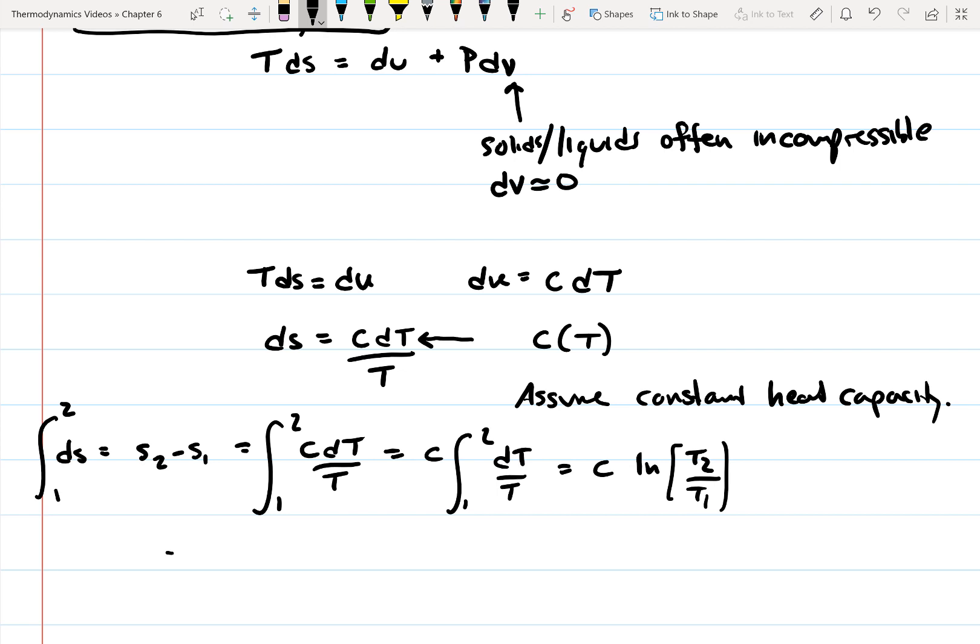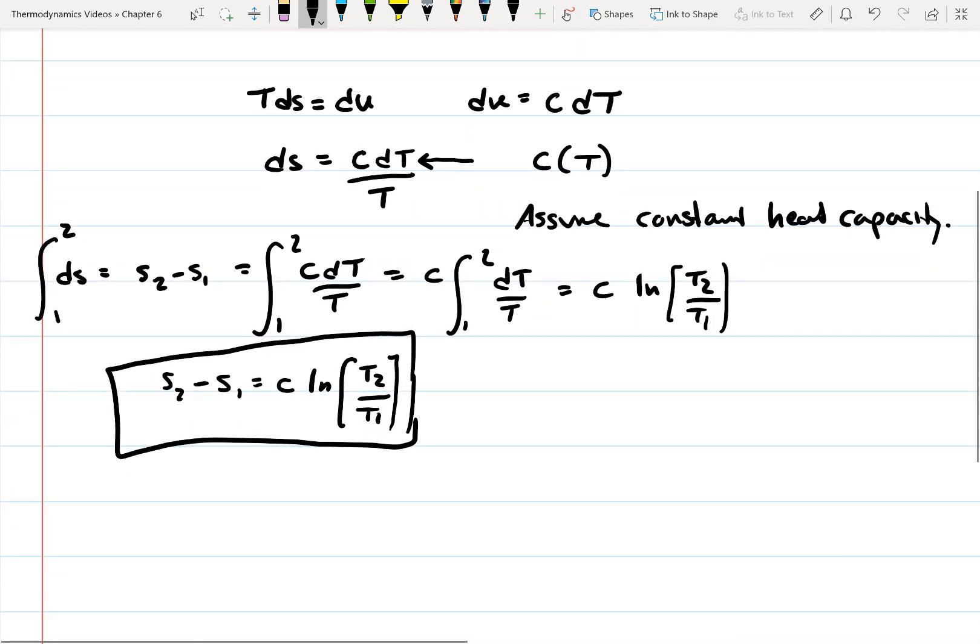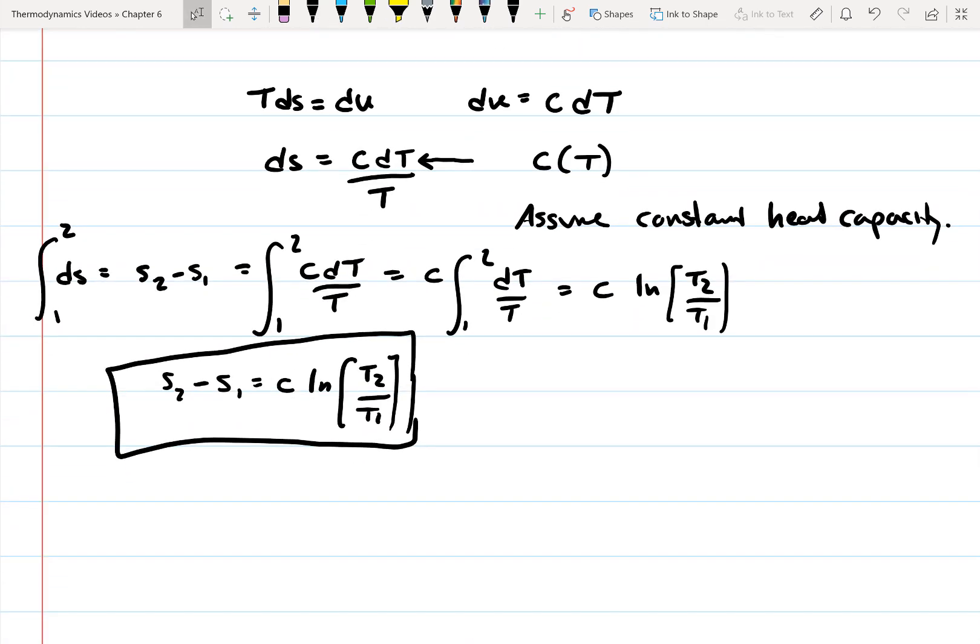So basically, we get the change in entropy, S2 minus S1, is equal to C natural log T2 over T1. So this is the equation that you're going to use to calculate the change in entropy for a solid or liquid.